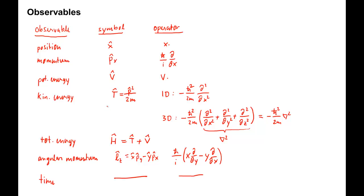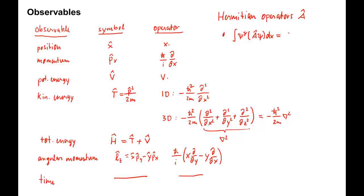All these operators for observables belong to a mathematical class called Hermitian operators. For a Hermitian operator A, we have the following property: the integral of Psi star times A operating on Psi dx is equal to the integral of A operating on Psi, all of that star, times Psi dx.